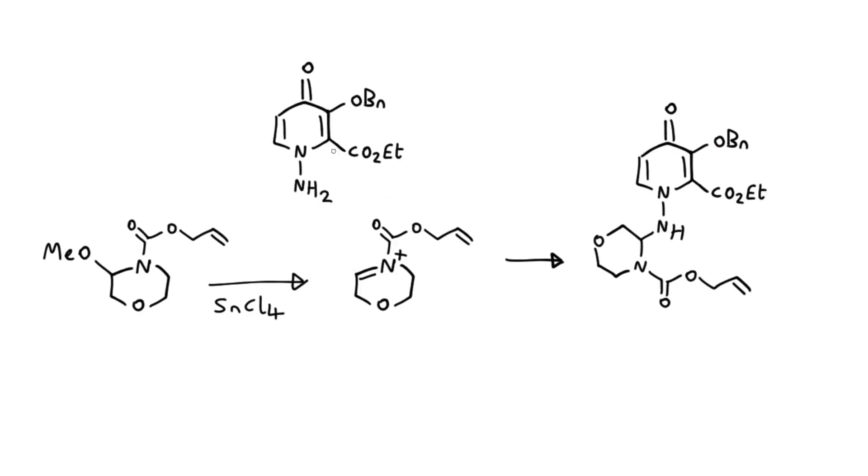The next step is to join this compound with the morpholine I mentioned earlier. This hemiaminal was treated with the highly Lewis acidic tin tetrachloride, which tears off the methoxy group and generates this iminium intermediate. That captures the hydrazine nitrogen and joins these two fragments together.